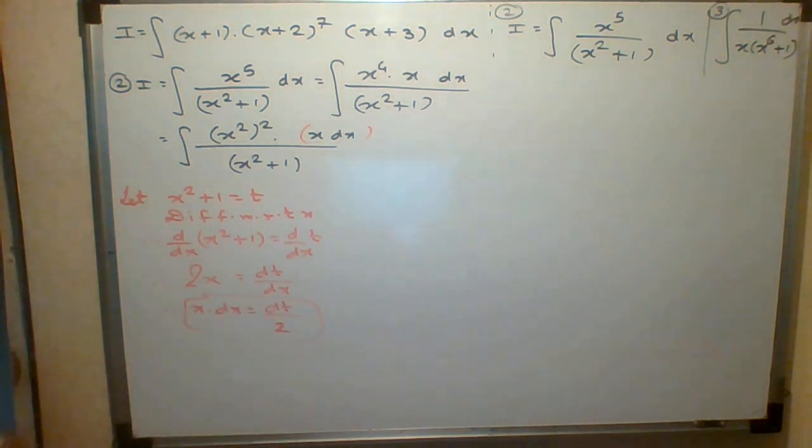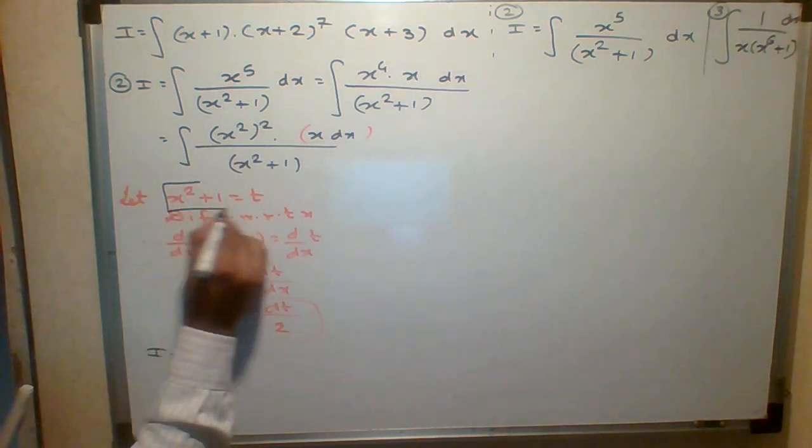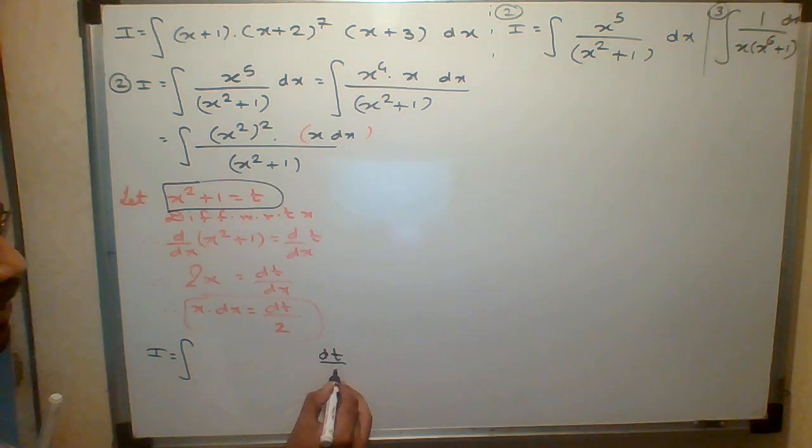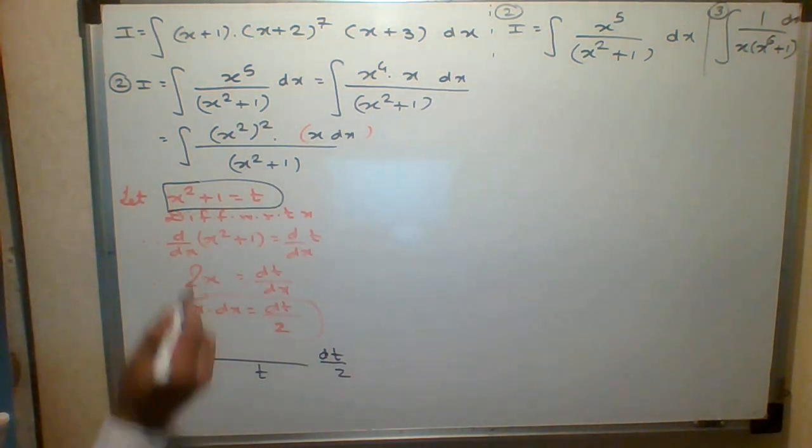Now convert the entire expression in terms of t. So what will be the integration? Now the key is x dx becomes dt upon 2. So this is the whole derivative. X squared plus 1 also becomes t. So what about the numerator?